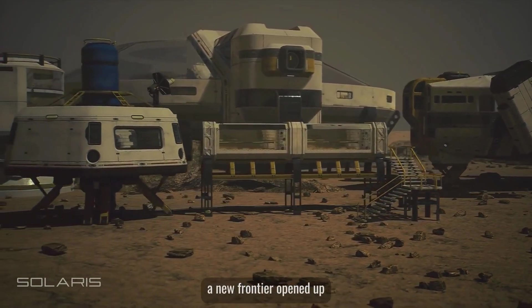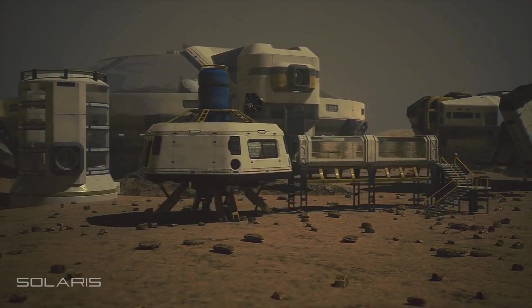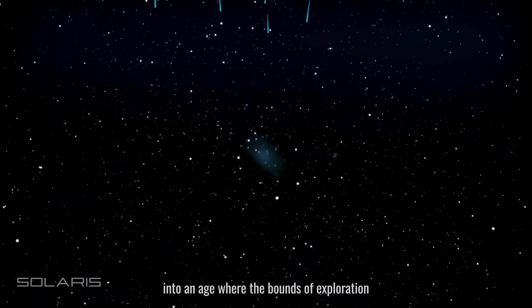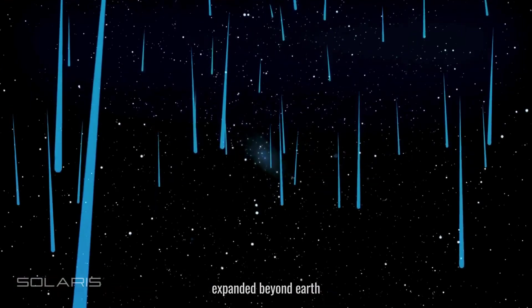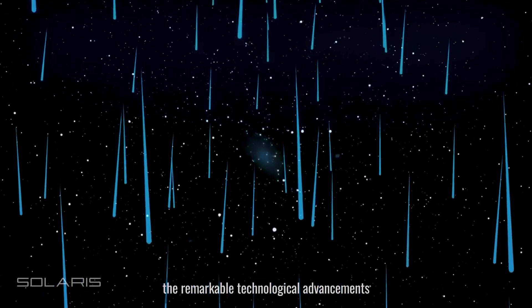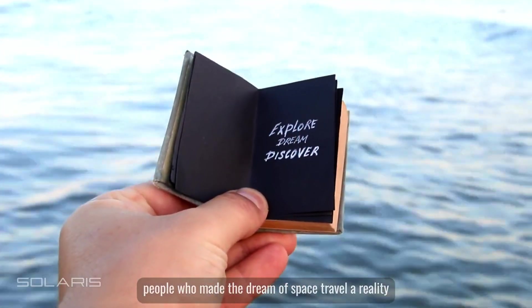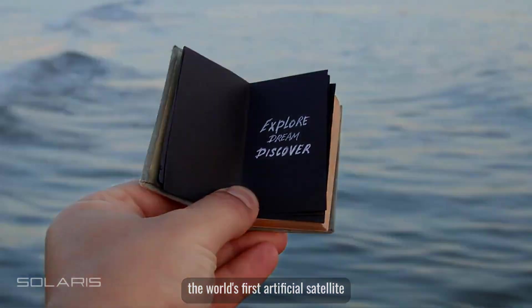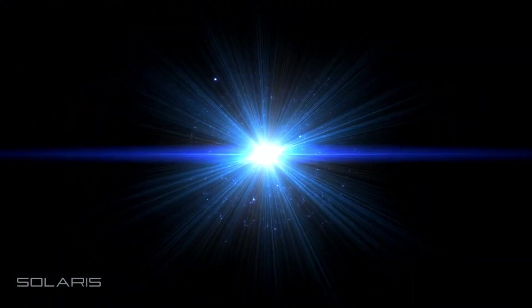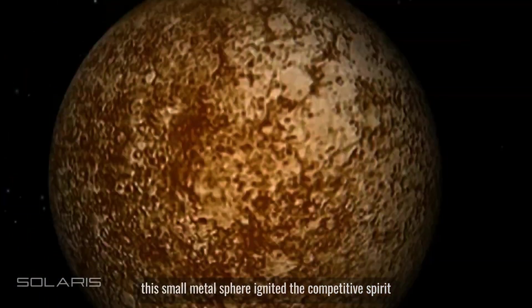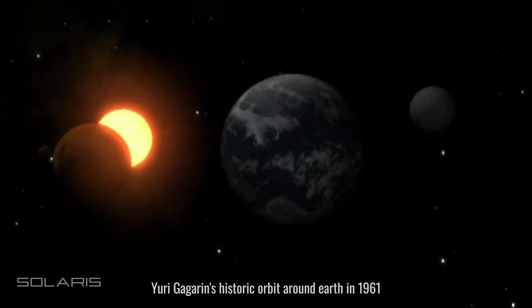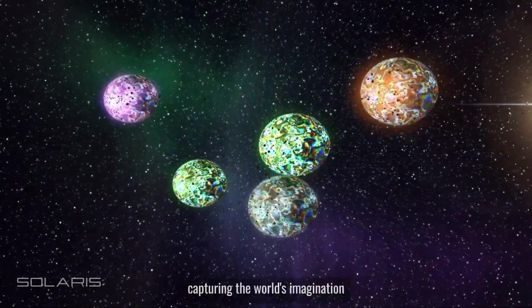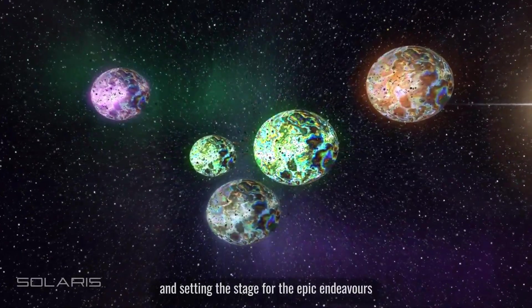In the mid-20th century, a new frontier opened up, not of land, but of space. The space race, a spirited contest primarily between the United States and the Soviet Union, catapulted humanity into an age where the bounds of exploration expanded beyond Earth. The race to space began with a beep from orbit: Sputnik, the world's first artificial satellite, launched by the Soviet Union in 1957. This small metal sphere ignited the competitive spirit, leading to a series of pioneering achievements. Yuri Gagarin's historic orbit around Earth in 1961 made him the first human to witness the globe from the blackness of space, capturing the world's imagination.